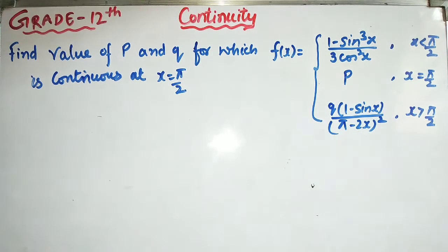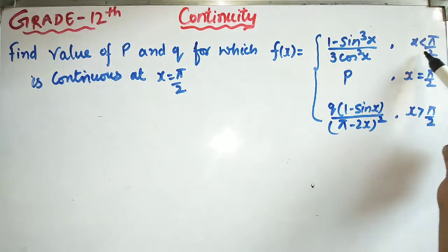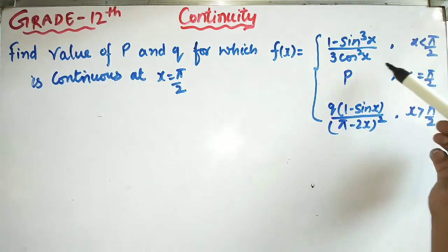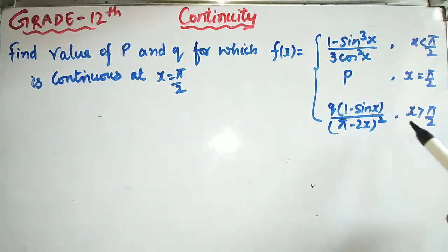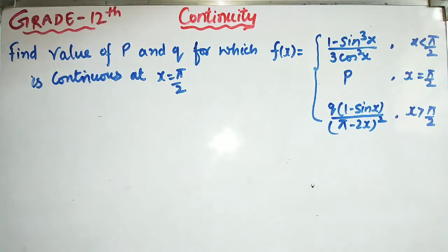Hi everyone, let's do more examples based on the topic of continuity. Here we have one question: find the value of p and q for which f(x) is continuous. The function is: when x < π/2, f(x) = (1 - sin³x) / (3cos²x); when x = π/2, f(x) = p; and when x > π/2, f(x) = q(1 - sinx) / (π - 2x)².